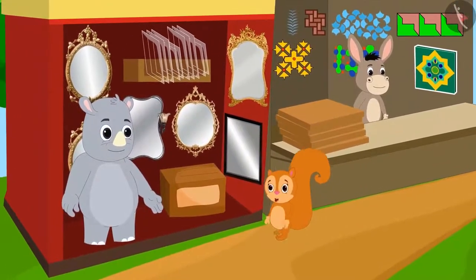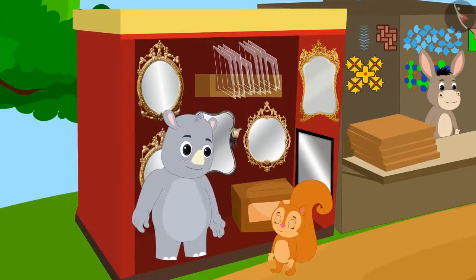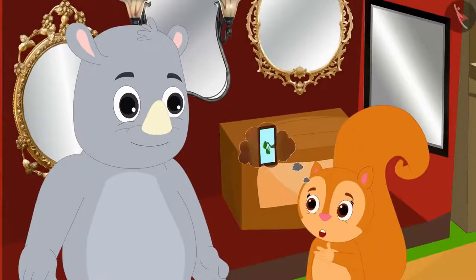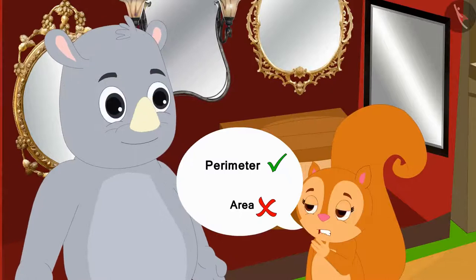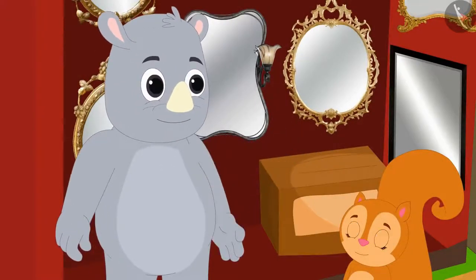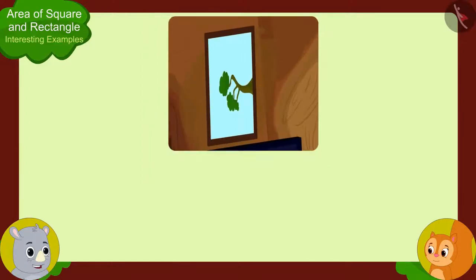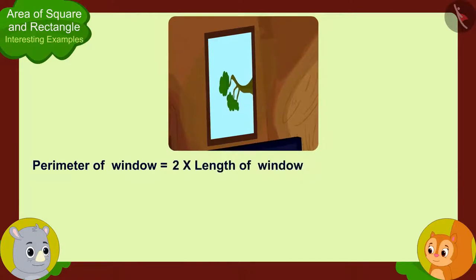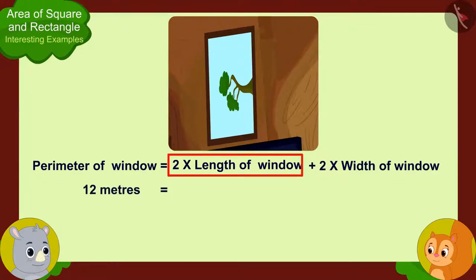While thinking this, Chanda reached Gaggoo's mirror shop. Gaggoo asked why she looked upset. Chanda explained: she wants to buy a glass for her rectangle shaped window, she remembers the perimeter of the frame and the length of the window, but she doesn't know the area. Gaggoo offered to help. The perimeter of a rectangle is two times the length plus two times the width. Chanda told him: perimeter is 12 meters, and length is 5 meters.